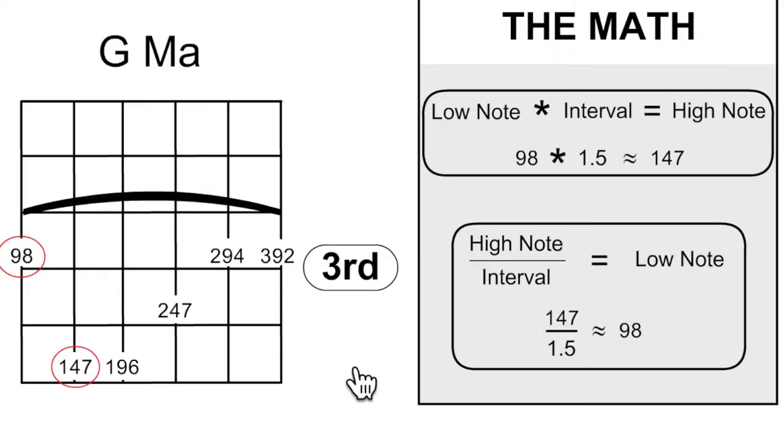If you know one note and the interval, you can figure out what the next note is going to be. We do this kind of thing all the time. We're always trying to make sense out of what's going on around us based on past experience and current experience. And we're always making a guess as to what's going to happen next.